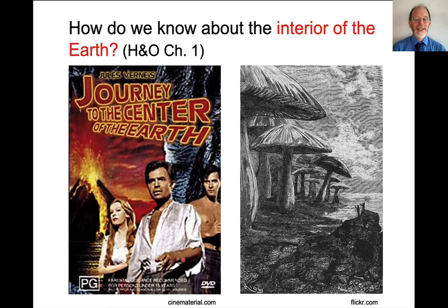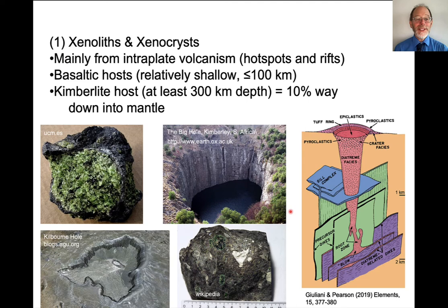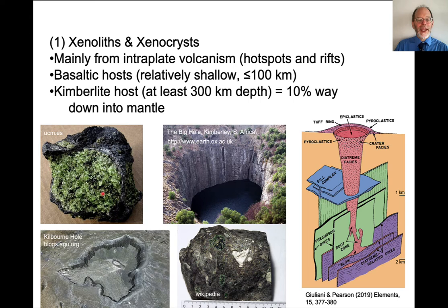So how do we actually know about the interior of the Earth? Hollywood has its own ideas — here's this vast cave with giant mushrooms. But in fact, one of the principal ways we know what is inside the Earth is from xenoliths and xenocrysts. These are foreign rocks — xeno is foreign, lith is rock — and foreign crystals, xenocrysts, that come up in volcanic eruptions. Most of the deep xenoliths come up in intraplate volcanic rocks, so hot spots and rifts. They are usually in basalts but can also come up in kimberlites, which are much deeper derived melts.